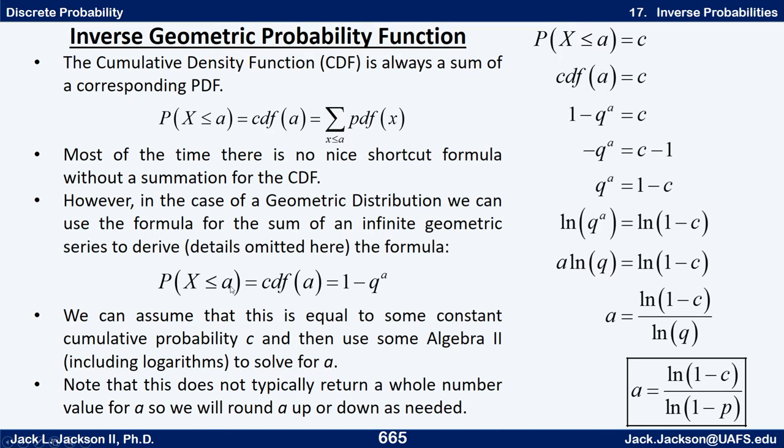So the probability that X is less than or equal to a is the CDF of a, which is the sum of the PDF, but that also turns out to be just 1 minus q to the a power. Now I've omitted the details here. I may or may not get back to that in another video later, showing you how that's derived, but it uses this little thing about geometric series from algebra.